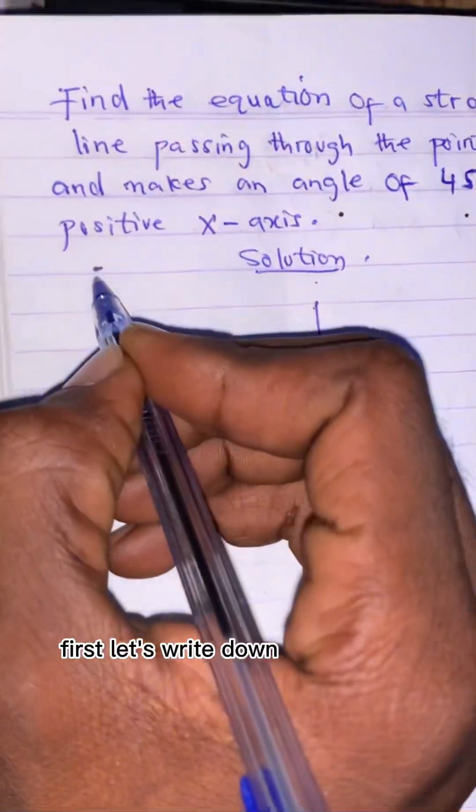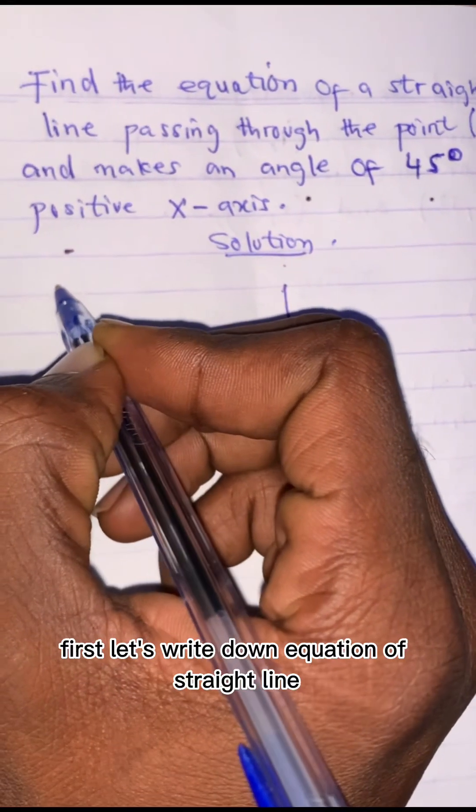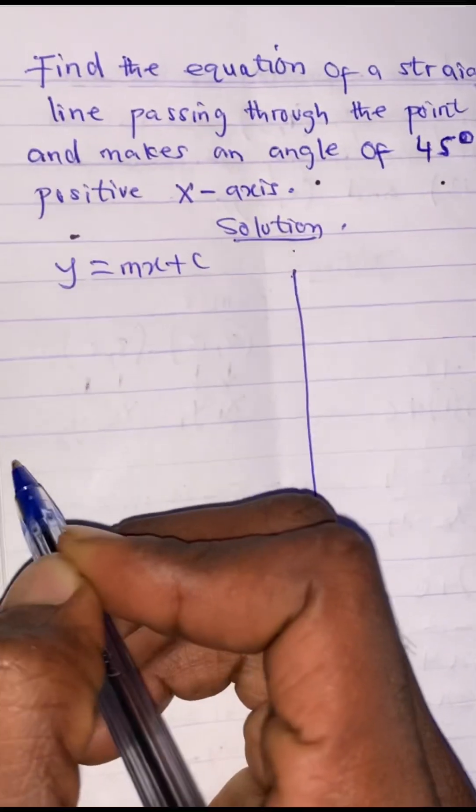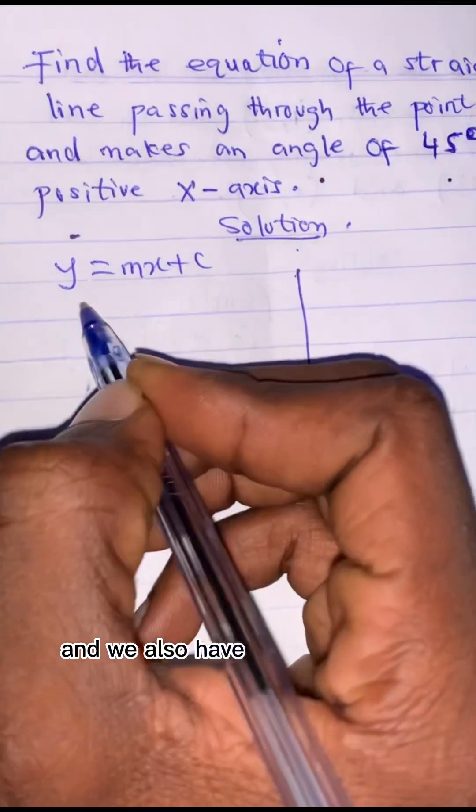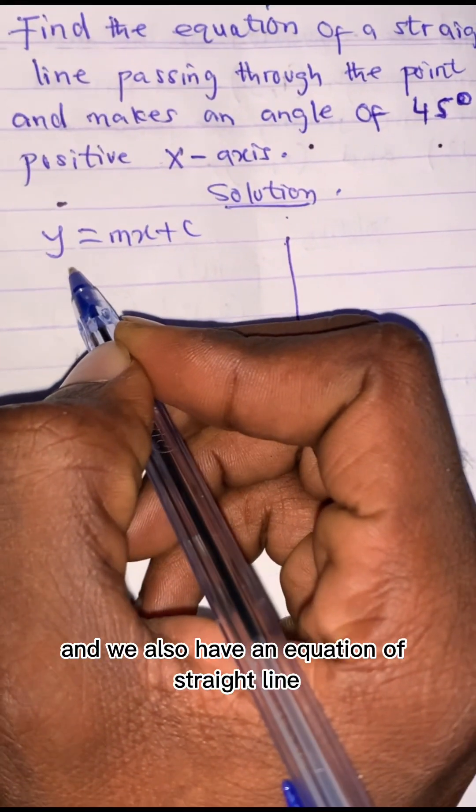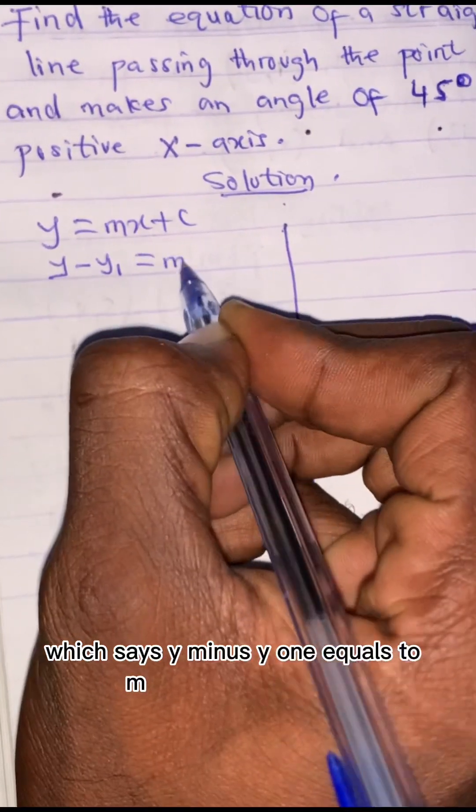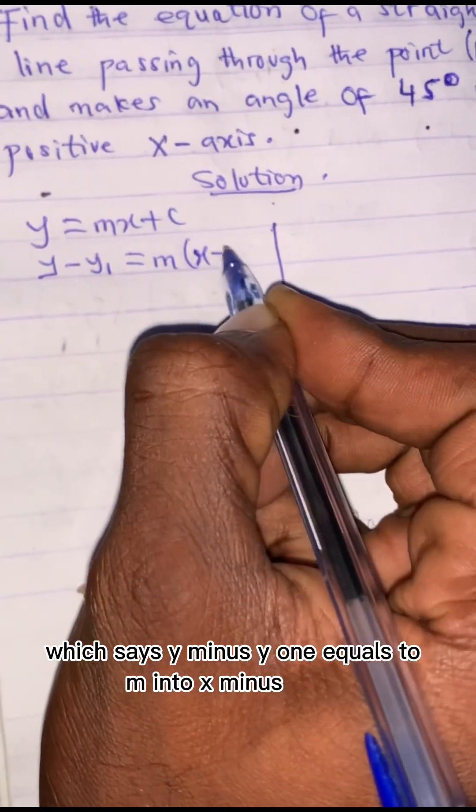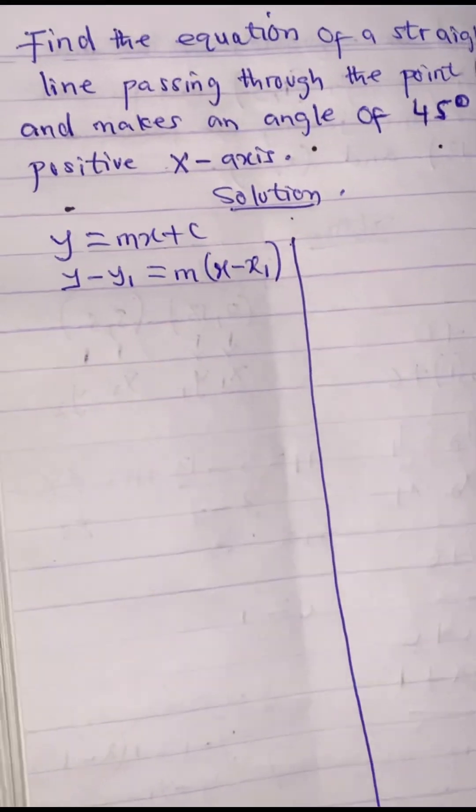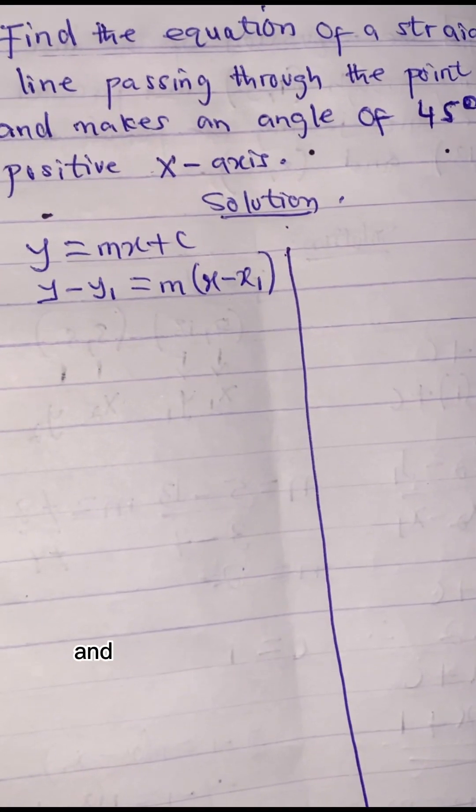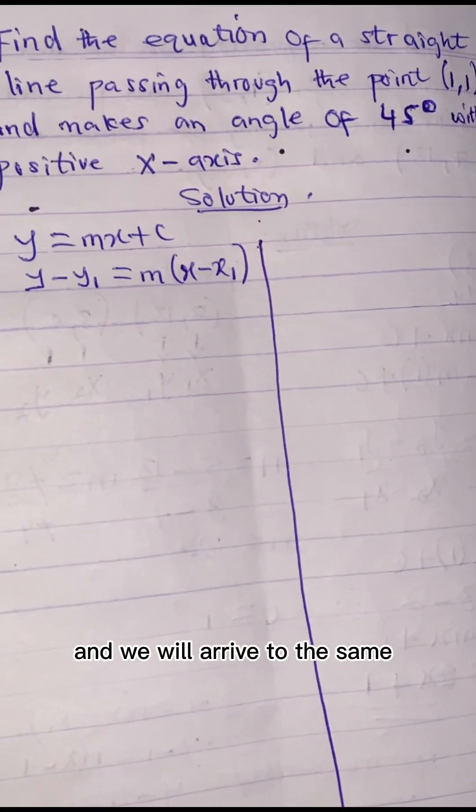First, let's write down the equation of a straight line: y = mx + c, and we also have an equation of a straight line which says y - y1 = m(x - x1). So we can use one among these two equations, and we will arrive to the same answer.